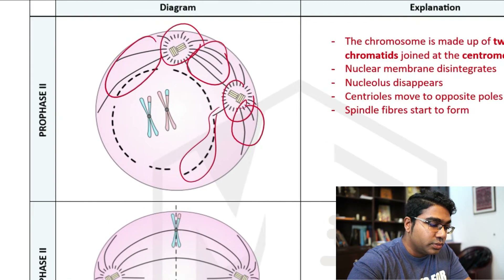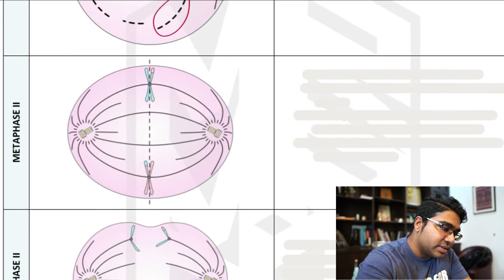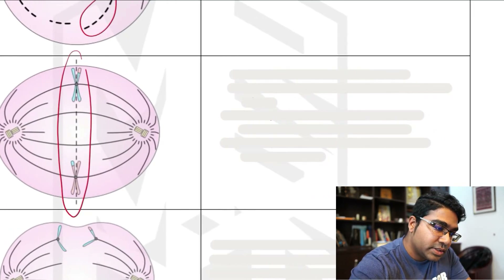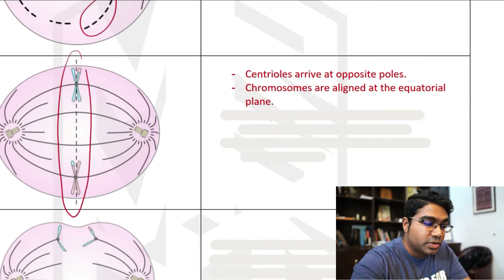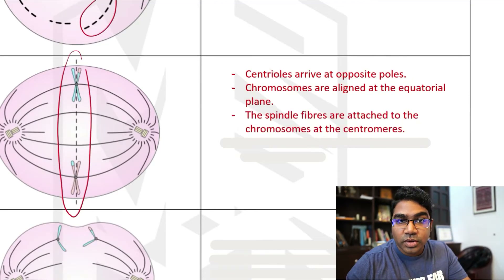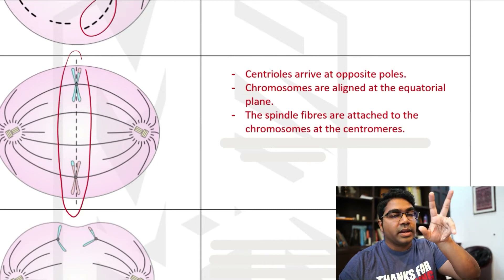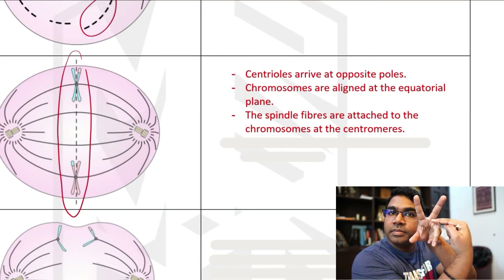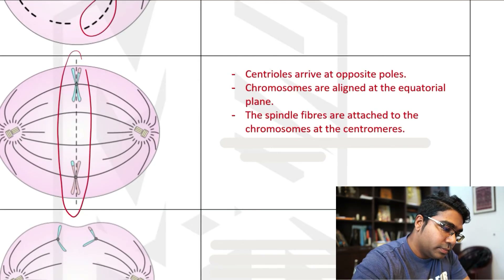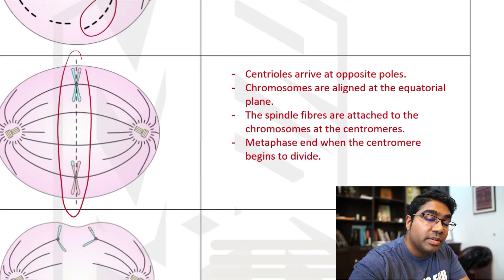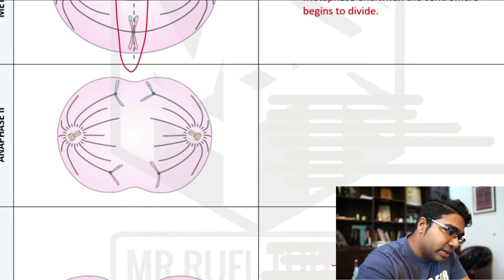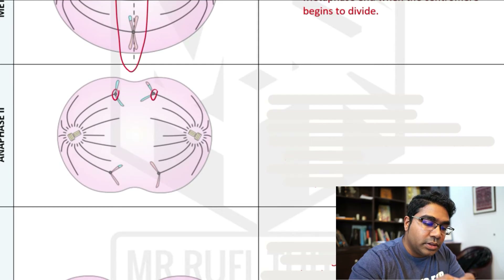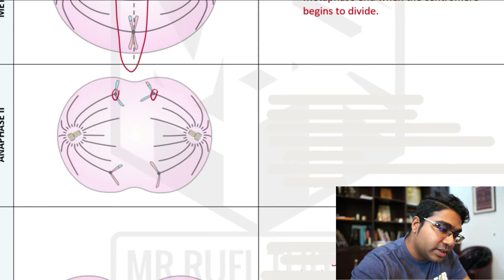Then we go on to metaphase 2. In metaphase 2, the chromosomes are aligned at the equatorial plane, just like in mitosis. Centrioles arrive at the opposite poles, chromosomes are aligned, and spindle fibers are attached to the chromosomes at the centromere. Both spindle fibers are attached to the centromere on either side. Metaphase ends when the centromere begins to divide — in this case, the centromere does split, due to the action of the spindle fibers.